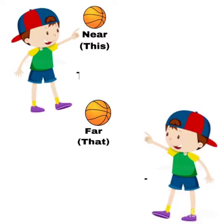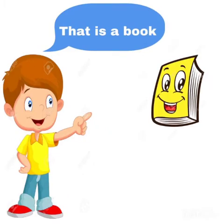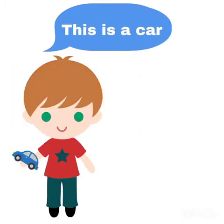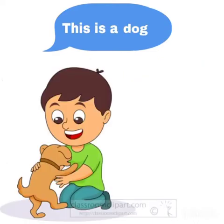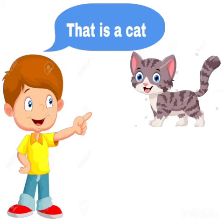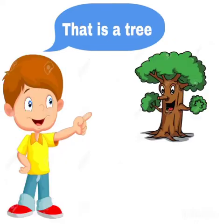This is used for near objects and that is used for far objects. Here are some few examples. This is a pencil. That is a book. This is a car. That is a bus. This is a dog. That is a cat. This is a flower. That is a tree.